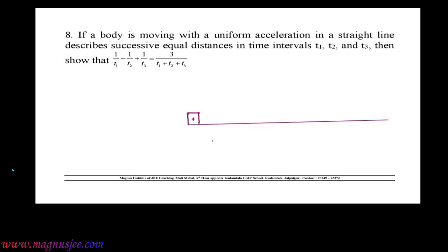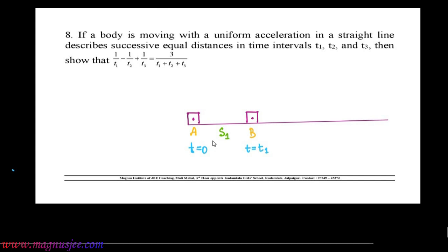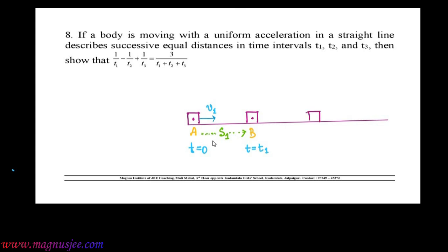Consider a straight line along which a body moves, starting from initial point A at t = 0. It starts from point A and reaches point B after time T1 seconds. The distance travelled from A to B is S1. Between A and B, the body moves with uniform speed or velocity V1 along the straight line AB.